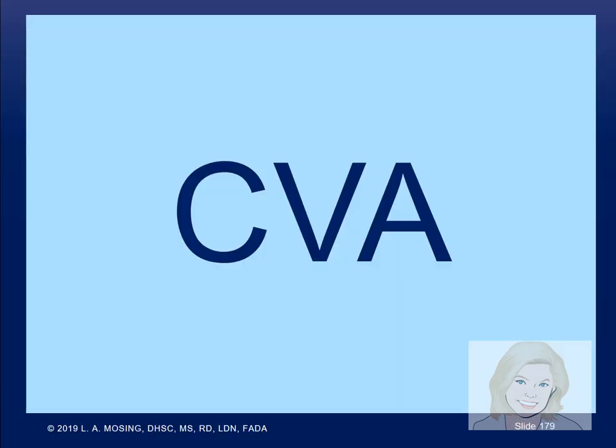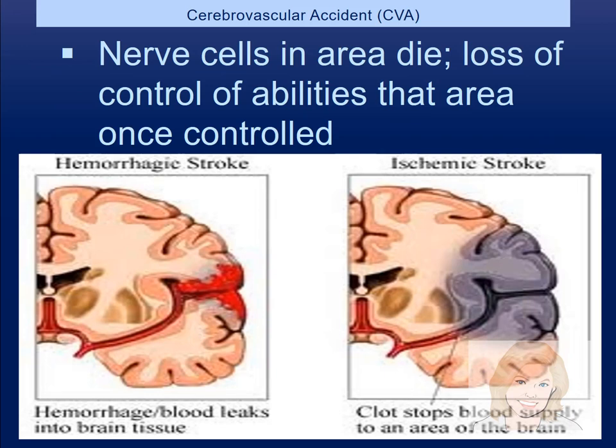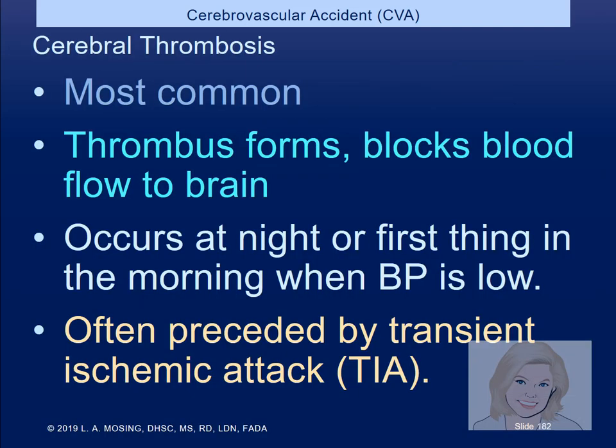CVA — cerebrovascular accident, brain attack — occurs when a blood vessel carrying oxygen and nutrients to the brain ruptures or is clogged by a blood clot, interrupting blood flow to an area of the brain. As a result, nerve cells in that area die, and the person loses abilities like walking, talking, or feeding themselves that the area controlled. Cerebral thrombosis is the most common type — a thrombus forms and blocks blood flow. It often occurs at night or first thing in the morning when blood pressure is low, often preceded by a TIA or mini stroke.